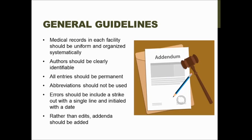All entries should be permanent, so you shouldn't be able to change anything. But if errors do occur, you should be able to strike them out with a single line, an initial, and a date. You should never completely obliterate a mistake, because if that chart is audited and pulled for something like a malpractice lawsuit, it could look really bad and it could look like you're destroying evidence. Abbreviations should not be used unless they're universally known, because they can be mistaken for a lot of different things.